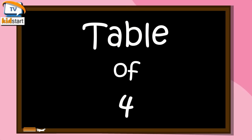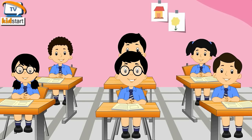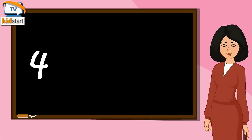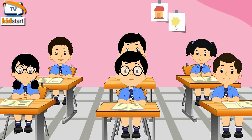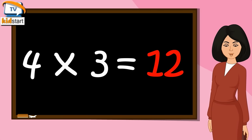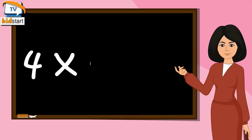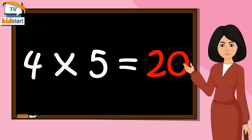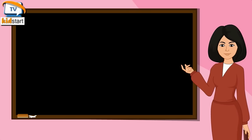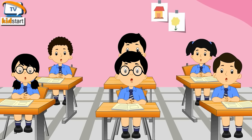Table of Four. Four ones are four. Four twos are eight. Four threes are twelve. Four fours are sixteen. Four fives are twenty. Four sixes are twenty-four.